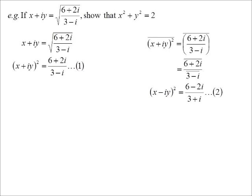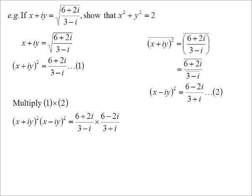So now all I've got to do to get the x squared plus y squared is multiply these two expressions together. So on the left hand side we get (x+iy)² times (x-iy)².